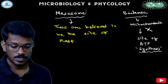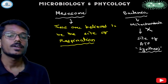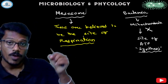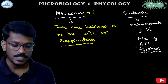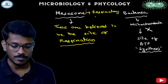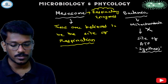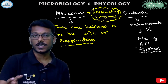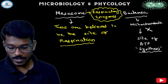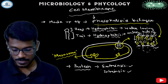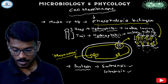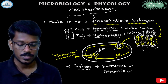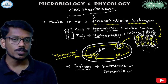The mesosome is the site of respiration in bacteria. Some of the enzymes required for the respiration process are found in the mesosome region — these are the respiratory enzymes. Because respiratory enzymes are present here, the mesosome is considered the site of respiration, and it is also the site of ATP synthesis.